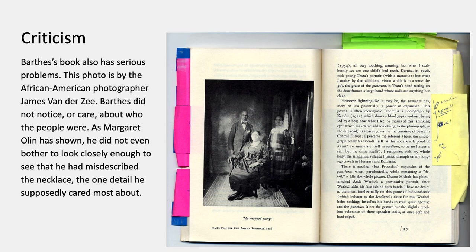Barthes' book also has serious problems. This photograph is by the African-American photographer James van der Zee. Barthes didn't notice or care about who the people were, about the conditions of the photograph — he didn't care about the politics or the place. The art historian Margaret Olin has shown that he didn't even look closely enough to see that he misdescribed the necklace, the one detail he supposedly cared about most. So this book has all kinds of problems, but somehow the passion of the book has been very persuasive and it continues to sell and to be assigned.